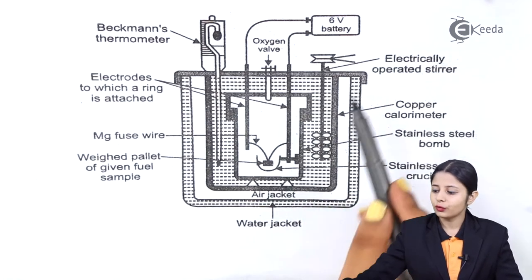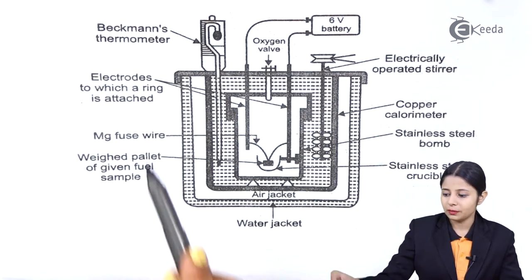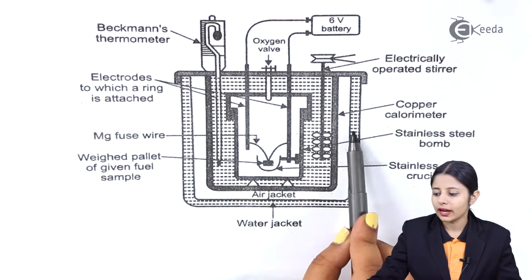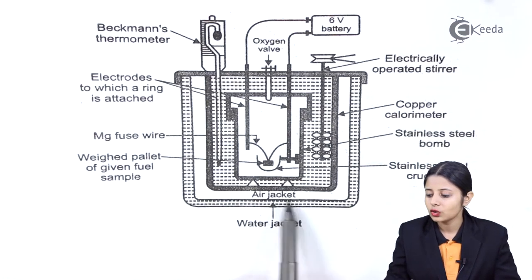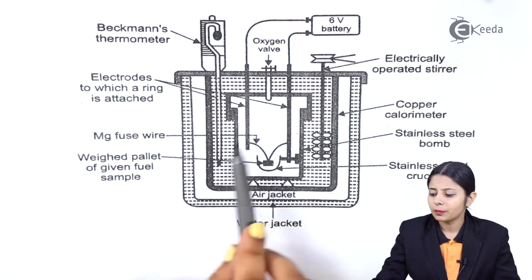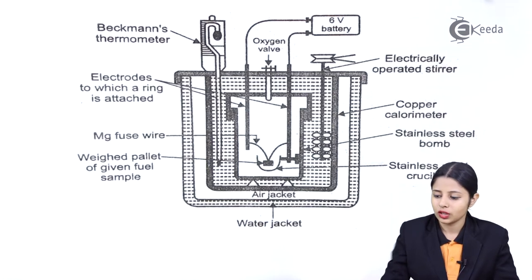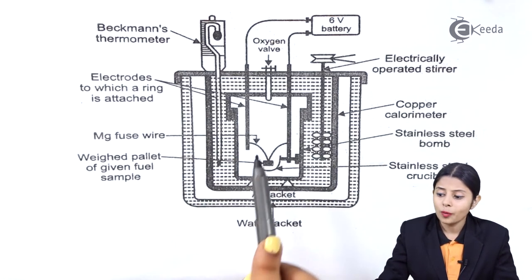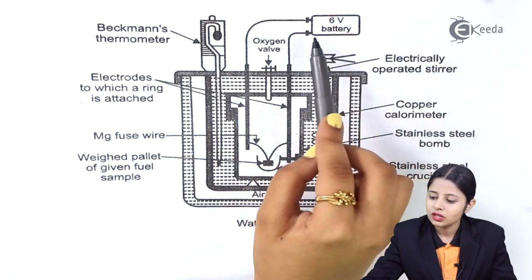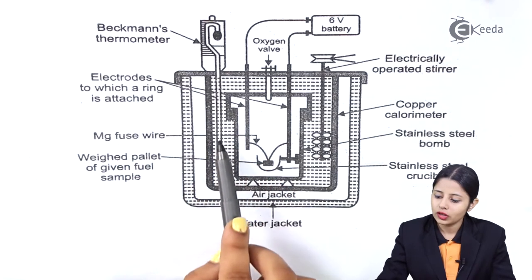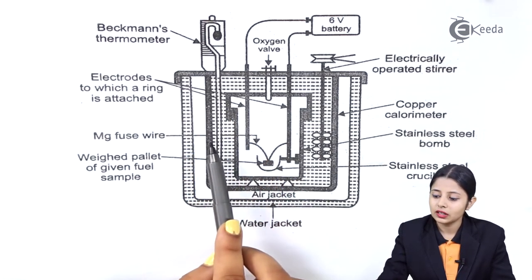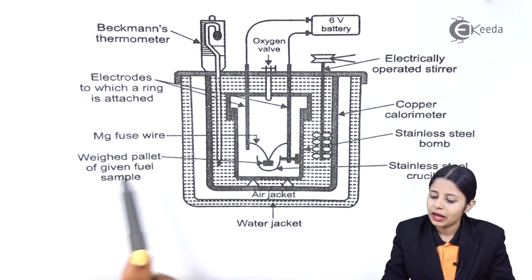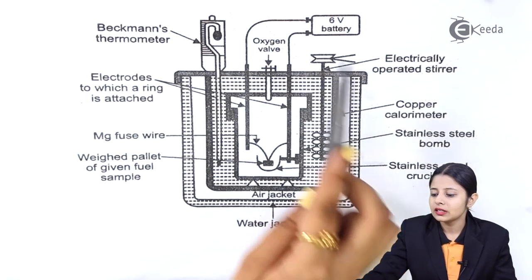Looking at the diagram: the entire outer structure is made up of stainless steel, and inside there is a copper calorimeter. Between the copper calorimeter and the stainless steel container are two jackets — the inner one is the air jacket and the outer one is the water jacket — both helping maintain internal temperature and prevent radiation of heat. The electrode with an attached ring supports the bomb. Oxygen is supplied through an oxygen valve. The Beckmann thermometer is attached directly and reads to one-hundredth of a degree. We also have the magnesium fuse wire, a weighed pellet of the given fuel sample.